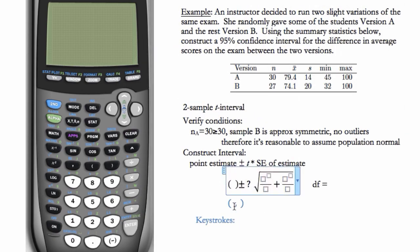So here, our difference is going to be the mean of A minus the mean of B. So that's just going to be 79.4 minus 74.1. T star, we'll have to determine later. Here, we're going to plug in S, the first S, which is 14.